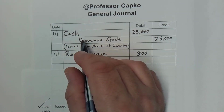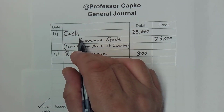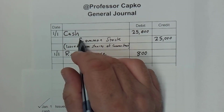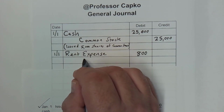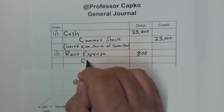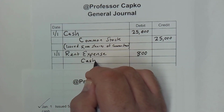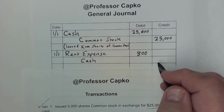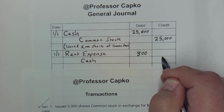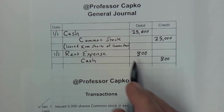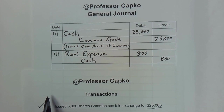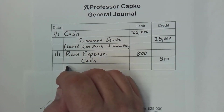And I know my cash went down by $800. I'm going to line it up here with that indent. My cash goes down, so I'm going to credit it for the same $800. My debits and credits balance, so we're ready to go on.